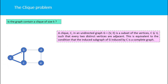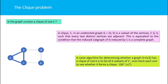The clique problem asks: given a graph, does it have a clique of size K? A naive algorithm lists all subsets of V of size K and checks whether each forms a clique. This takes non-polynomial time, so we cannot complete this checking in polynomial time.